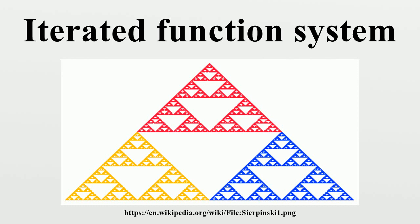The functions are normally contractive, which means they bring points closer together and make shapes smaller. Hence, the shape of an IFS fractal is made up of several possibly overlapping smaller copies of itself, each of which is also made up of copies of itself, ad infinitum. This is the source of its self-similar fractal nature.